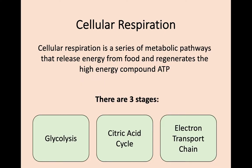Now that we've had a recap of ATP, it's time to move on to cellular respiration itself. We're going to start by looking at the three stages of respiration: glycolysis, which takes place regardless of whether oxygen is present, and the citric acid cycle and the electron transport chain, which only take place if oxygen is available.